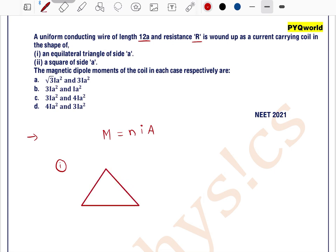In the first case, it is given that an equilateral triangle of side A. We have an equilateral triangle having a side A here. This is A, this is A, this is A, which gives perimeter 3a.